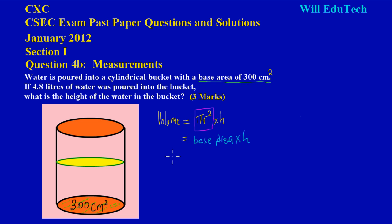To calculate the volume, we look at the other piece of information given: 4.8 liters of water was poured into the bucket. In math we have to use common units, so since the base area is in centimeters squared, I must convert my liters to centimeters cubed to substitute for the volume. So the next thing I have to do is convert 4.8 liters to centimeters cubed.